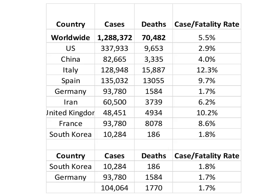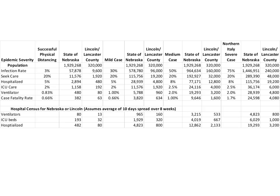Looking at case fatality rates around the world, most countries' numbers are way off because they've given up on testing and are just trying to stem the tide. The case fatality rate isn't really 10% like in the UK or 12% in Italy — so many cases are going unidentified. The two countries with the best and most widely available testing are Germany and South Korea, so their numbers are closer. Their case fatality rates have gone up a bit due to the lag between infection, getting sick, going on a ventilator, and potentially dying — which can take two to three weeks.